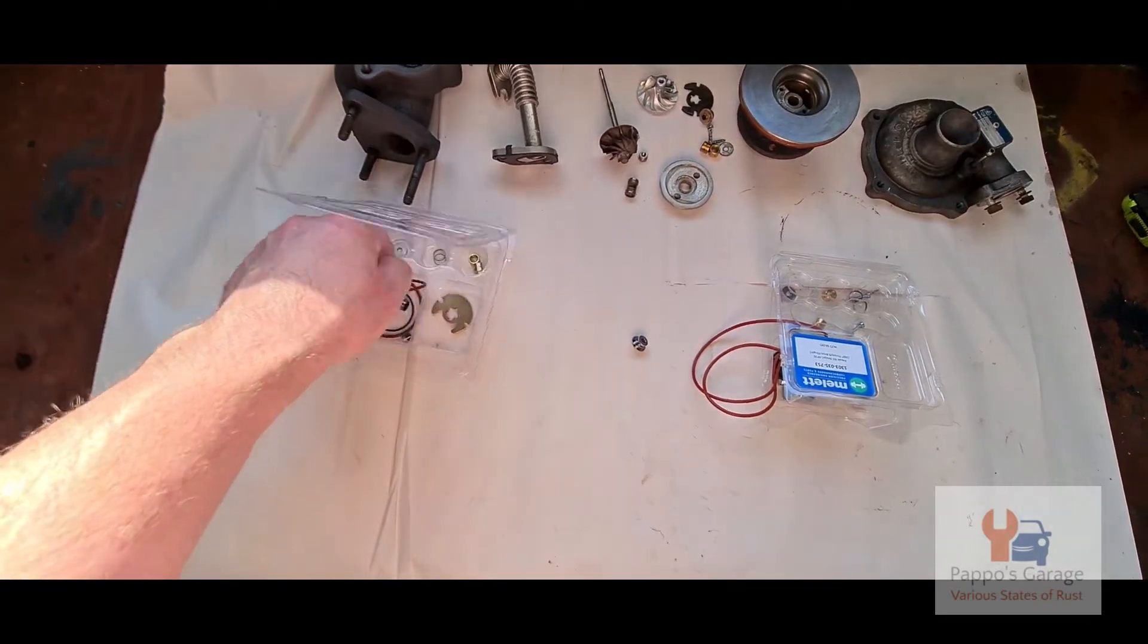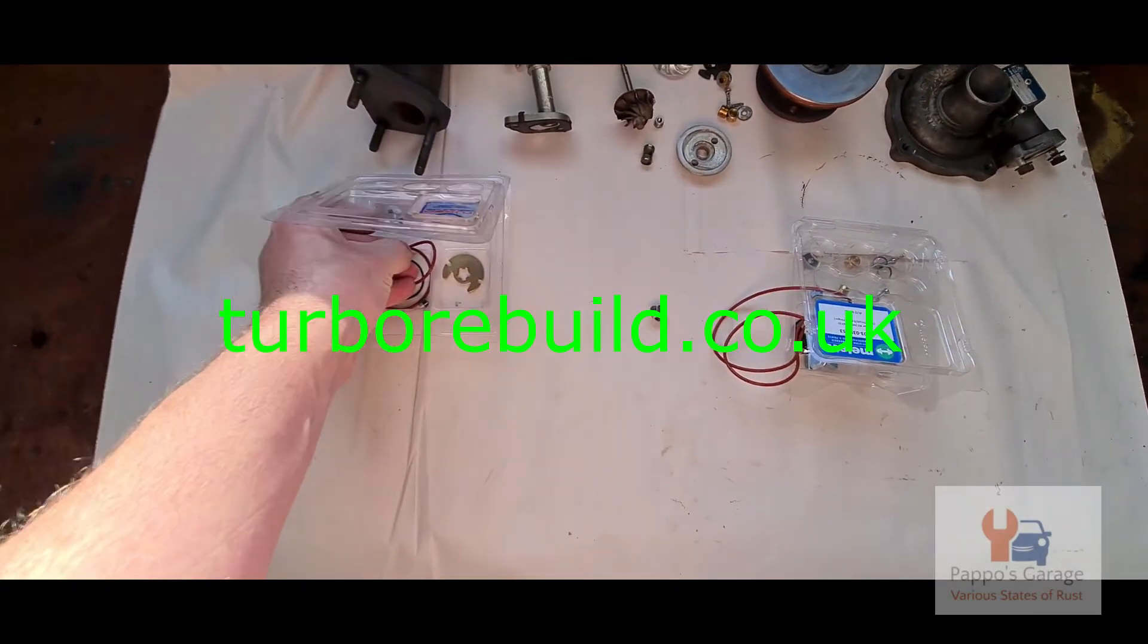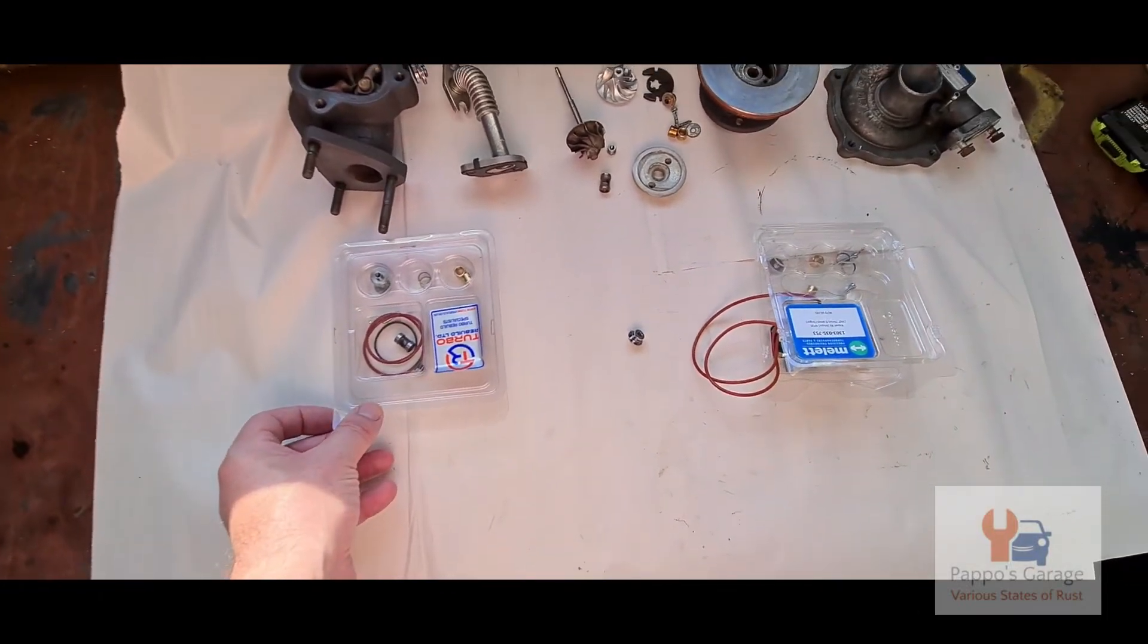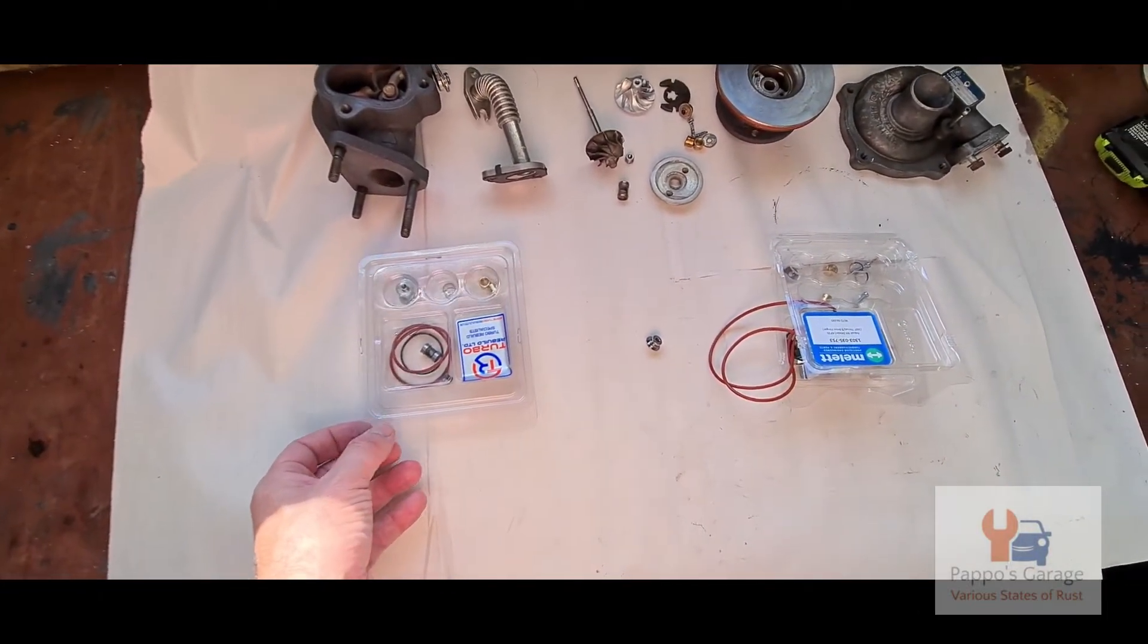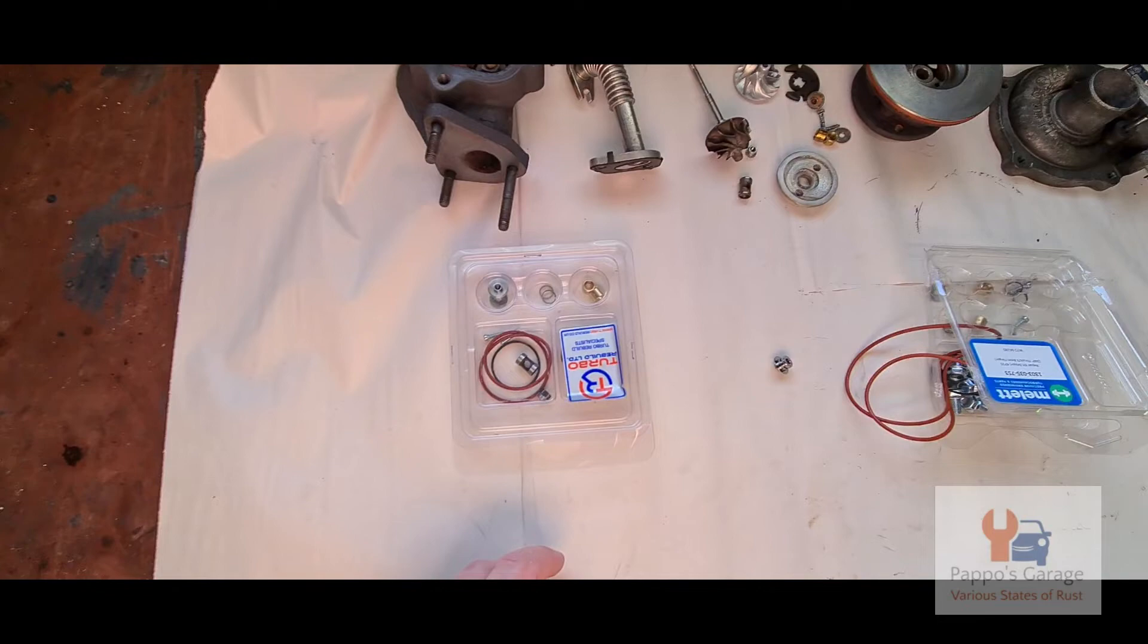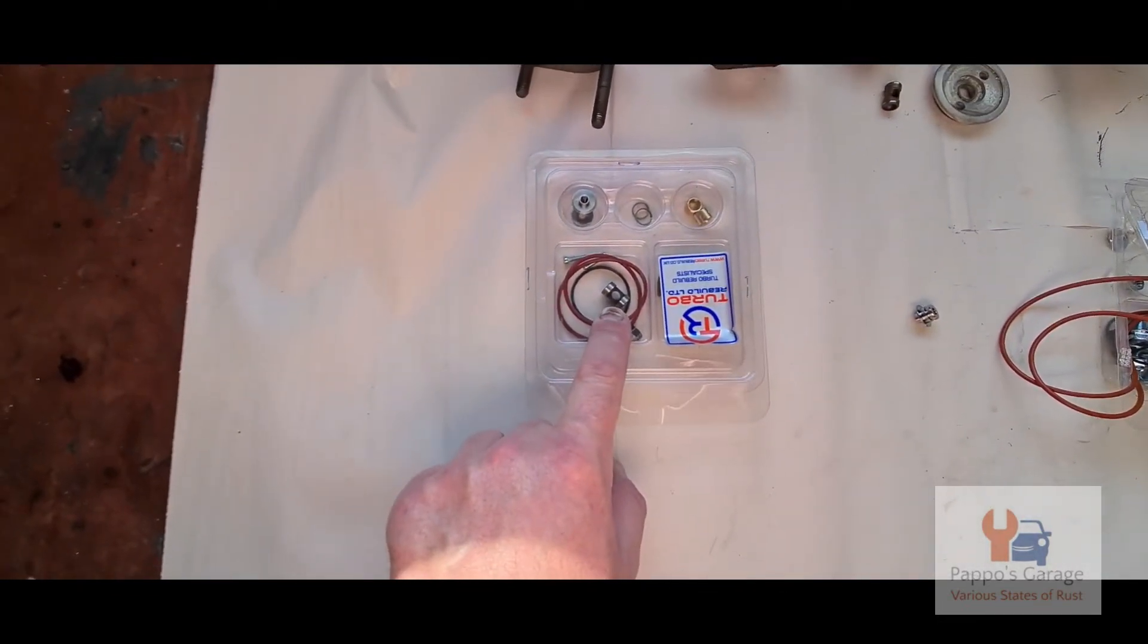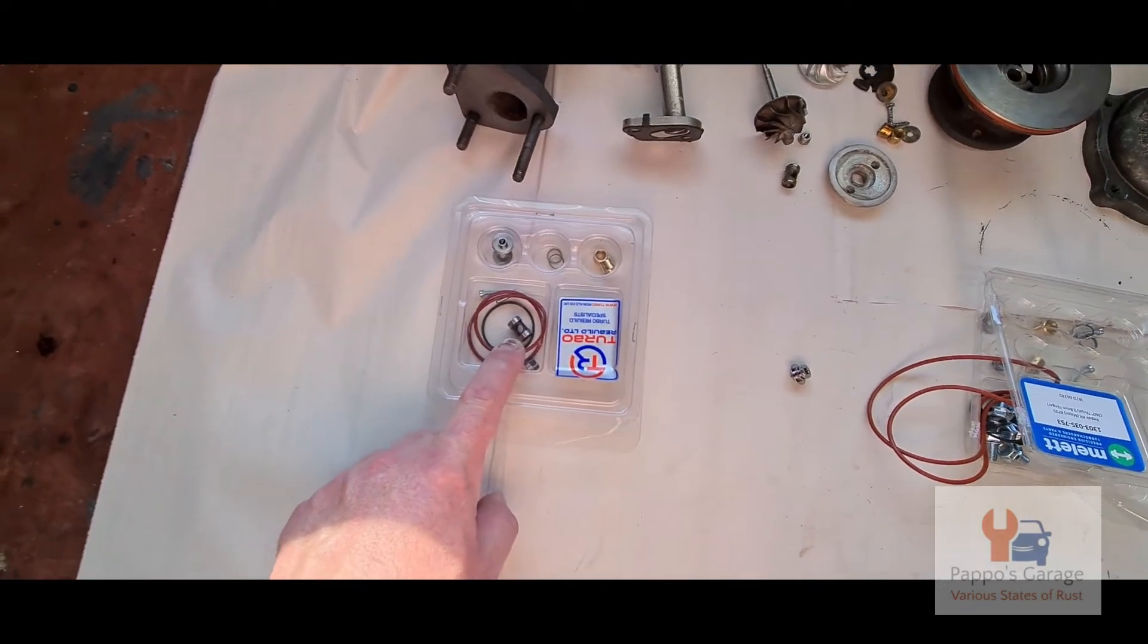What you get with the flat back from Turbo Rebuilt: you get the floating bearings, you get this bobbin, which sits right in the middle between the bearings.